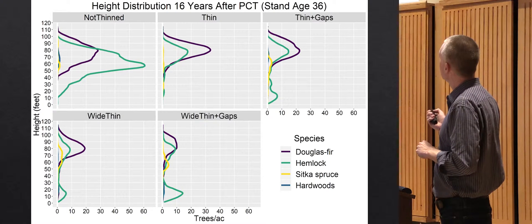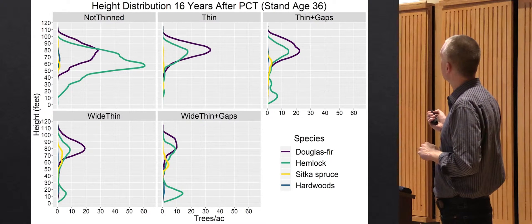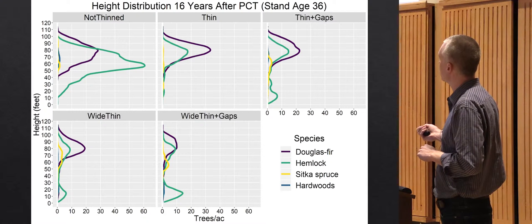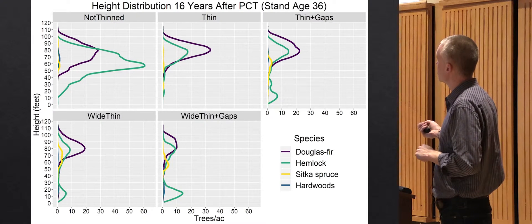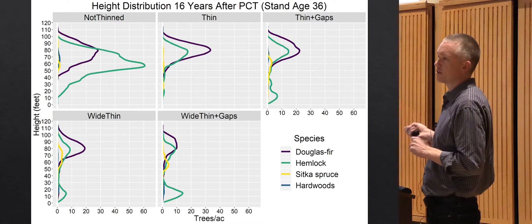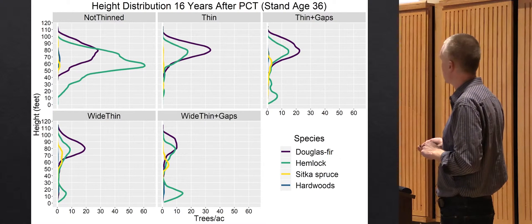In these two treatments, the thin plus gaps and wide thin plus gaps, they tried to leave 40% non-Doug fir to get a more diverse overstory. From what I've seen, that didn't really work out too well because basically you have Doug fir and hemlock dominating the overstory. Where they tried to leave some other species besides these two, they just didn't really last. Doug fir and hemlock compete most strongly on these sites. One other thing to point out in these three alternative thinning treatments, you do have enough light to allow this younger cohort of hemlock to start to develop, to get up to 20 or 30 feet tall.